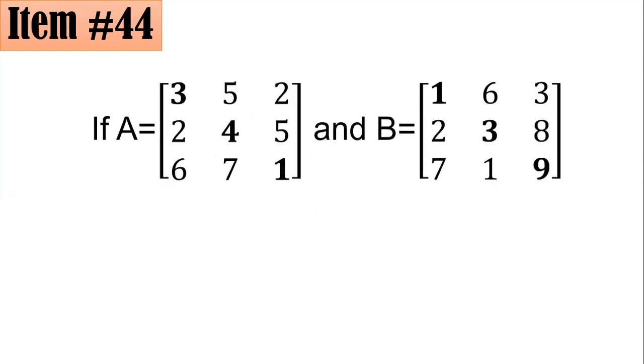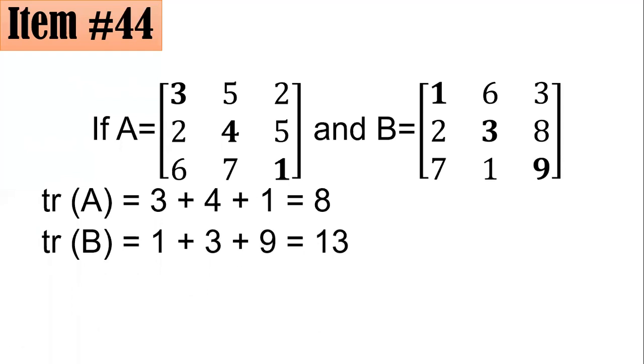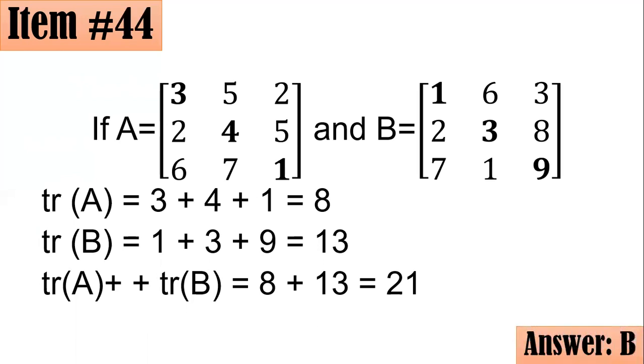From here, if you have your matrix A, the entries in the main diagonal are 3, 4, and 1. And therefore, the sum of these entries is 3 plus 4 plus 1, which is 8. So the trace of A is 8. For the second matrix B, the entries in the main diagonal are 1, 3, and 9. So the trace of that is the sum of 1, 3, and 9, which is 13. And since you're looking for trace of A plus trace of B, then you have 8 plus 13, which is 21, letter B.